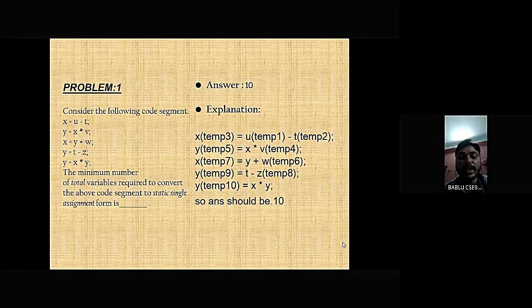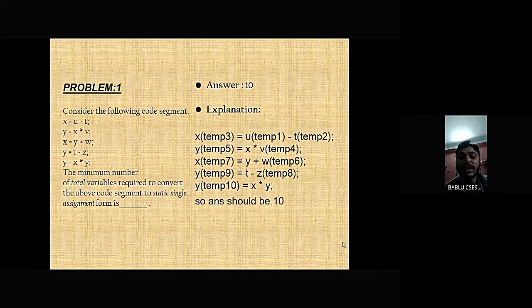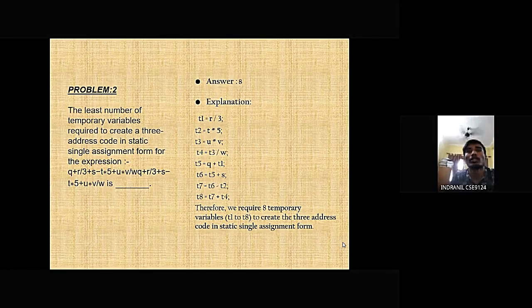The answer is 10. For example: x_temp3 = u_temp1 minus t_temp2; y_temp5 = x_temp4 into k; x_temp7 = y_temp6 plus w; y_temp9 = t minus z_temp8; y_temp10 = x into y. The total temporary variables needed is 10, so the answer is 10. This is the minimum number of temporary variables required to create a three-address code in static single assignment form.